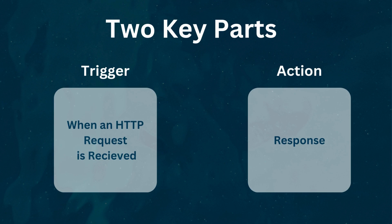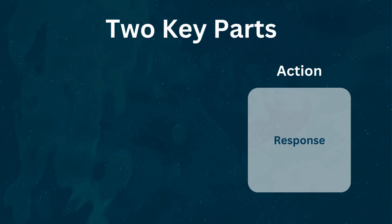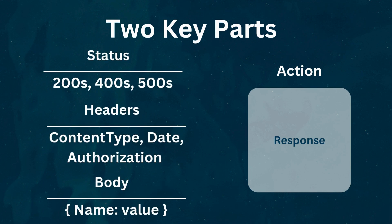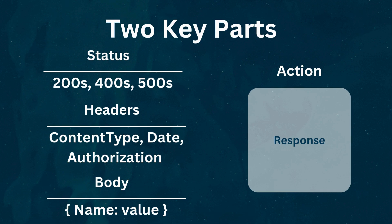Now let's talk about the other piece of this puzzle: the Response action. It has just a couple of parameters. You pick a status code — it only supports status codes in the 200s, 400s, and 500s, and you'll see why that's relevant in a moment. Content headers available include content type, date, and authorization, which is more comprehensive than you'd expect. I used content type and passed a JSON response back. It also supports other types, including HTML, meaning you could pass valid HTML code back through your webhook and have it rendered on the page that made the call. You also have a response body in the same JSON format as before.